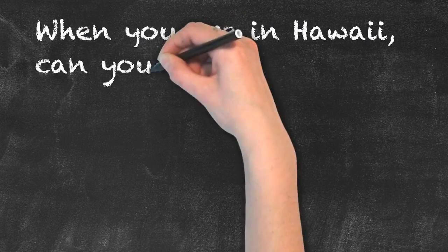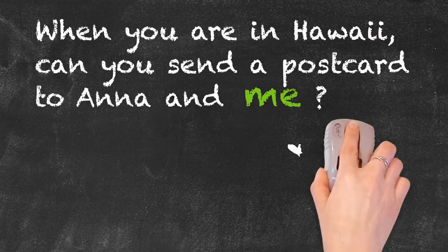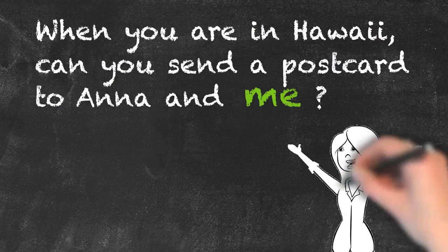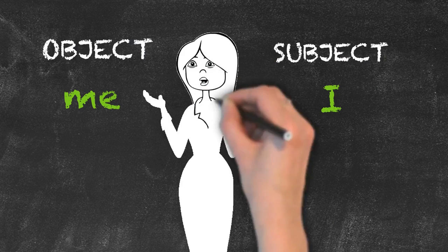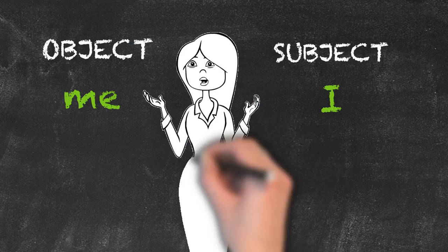used for objects. That's why me is correct here. When you are in Hawaii, can you send a postcard to Anna and me? Next time, make sure whether you're talking about a subject or an object. That's it for today.